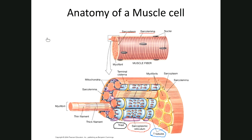A myofibril (M-Y-O-F-I-B-R-I-L) is a cylindrical mass of two kinds of myofilaments. The two types are actin — the thin myofilaments — and myosin — the thick myofilaments. It's easy to remember: actin and thin sound alike, so myosin is the thick one.